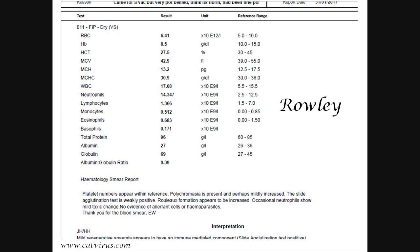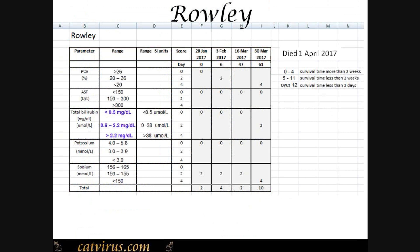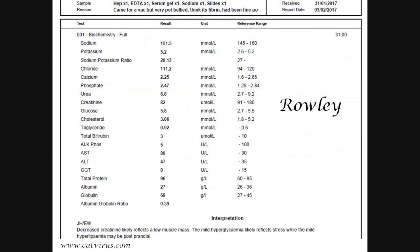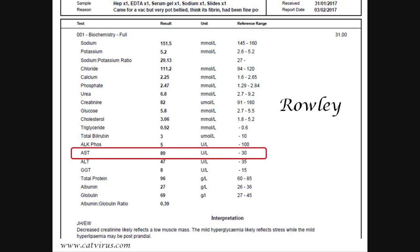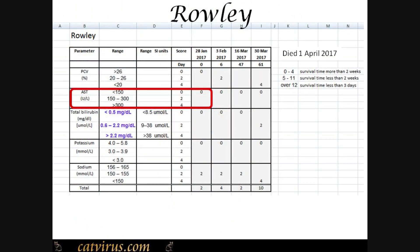Let's have a look at Rolly's data. We go to his hematocrit, which is 27.5, and then we look at the table — we see that it's called PCV here. 27 is greater than 26, and that means the score is 0, and we put in 0 under the date, which was the 28th of January. Next we go to his AST level, which was 89 units per liter. Looking at 89 units per liter, which is less than 150, so again that's a score of 0, and we put that into the table. You carry on like that until all the cells are filled, and then it will automatically give you a total at the bottom.